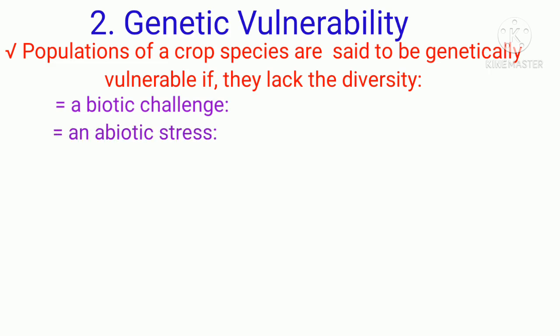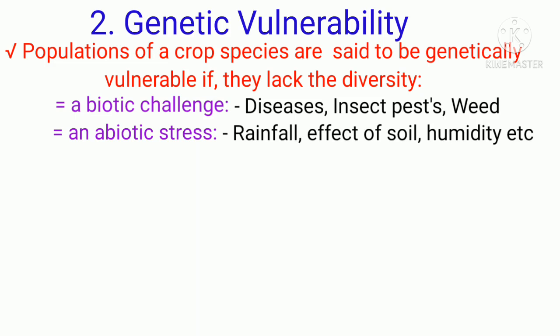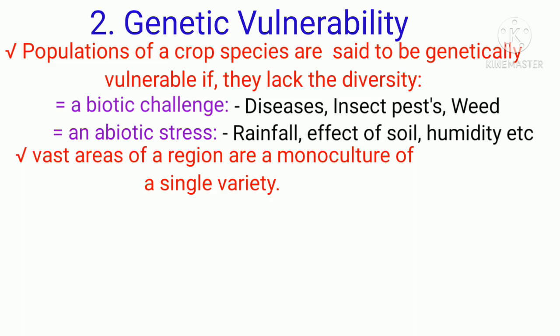When we say biotic challenge, it includes disease, insect pests, and weeds. When we say abiotic stress, it may be rainfall, moisture, soil salinity or acidity, and other factors. The concept of vulnerability implies a lack or low level of genetic diversity, most graphically illustrated when a vast area of a region is a monoculture of a single variety — meaning the crops lack genetic diversity and become vulnerable to diseases or insect pests.